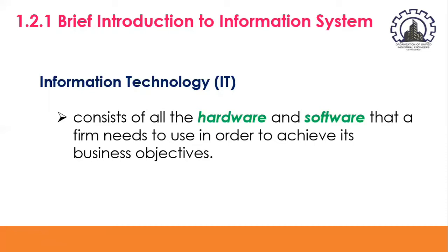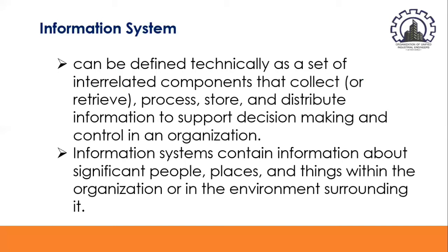Information systems are more complex and can be best understood by looking at them from both a technology and a business perspective. An information system can be defined technically as a set of interrelated components that collect or retrieve, process, store, and distribute information to support decision-making and control in an organization. In addition to supporting decision-making, coordination, and control, information systems may also help managers and workers analyze problems, visualize complex subjects, and even create new products.